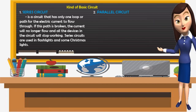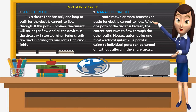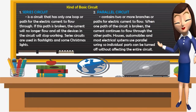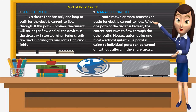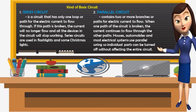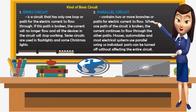In a parallel circuit, it contains two or more branches or paths for electric current to flow. When one path of the circuit is broken, the current continues to flow through the other paths. Houses, automobiles, and most electrical systems use parallel wiring, so individual parts can be turned off without affecting the entire circuit.